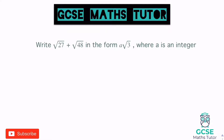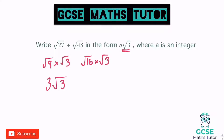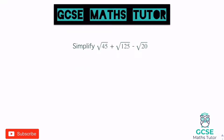Let's have a look at another one: root 27 plus root 48, in the form a√3 where a is an integer. I prefer this wording because it gives us a hint that we'll get a root 3. Straight away I can think: 3 times something must make 27, that something must be a square number - it's 9. So root 27 is root 9 times root 3, which is 3 root 3. For root 48, 3 times 16 is 48, so root 48 is root 16 times root 3. Root 16 is 4, so it's 4 root 3. Adding them: 3 root 3 add 4 root 3 gives 7 root 3.